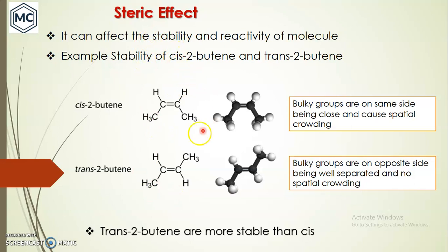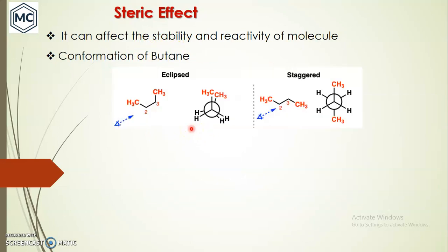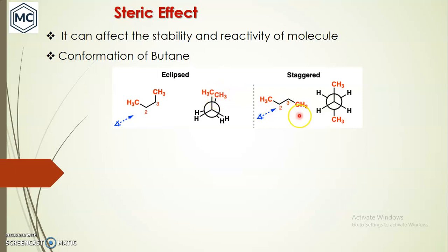The next property is the conformations of butane. There are many conformational structures for butane; I am discussing two here: the eclipsed conformation and the staggered conformation. In the eclipsed conformation of butane, the two bulky methyl groups are eclipsed — the dihedral angle between the two methyl groups is zero. In the staggered conformation, the two methyl groups are well separated and anti to each other, in opposite directions.